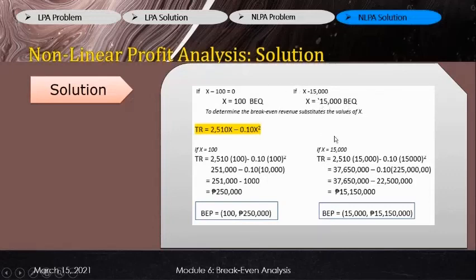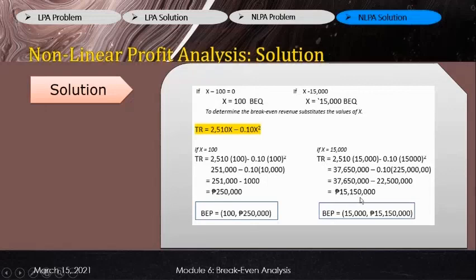For the second factor, substitute X equals 15,000 into total revenue: 2,510 times 15,000 equals 37,650,000; minus 0.10 times 15,000 squared equals 0.10 times 225,000,000 equals 22,500,000. So 37,650,000 minus 22,500,000 equals 15,150,000. The second break-even point is X equals 15,000 with total revenue of 15,150,000 pesos.